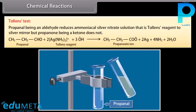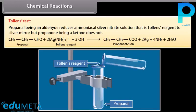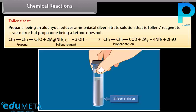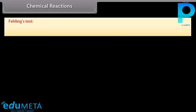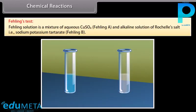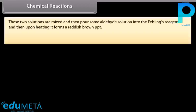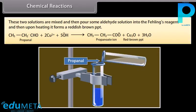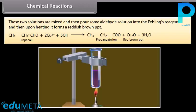Tollens test: propanal, being an aldehyde, reduces ammoniacal silver nitrate solution (Tollens reagent) to a silver mirror, but propanone, being a ketone, does not. Fehling's test: Fehling solution is a mixture of aqueous copper sulfate (Fehling A) and alkaline solution of Rochelle's salt, that is sodium potassium tartrate (Fehling B). These two solutions are mixed and some aldehyde solution is added; upon heating it forms a reddish-brown precipitate.